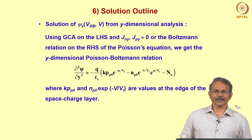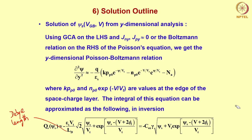We said that if you integrate this equation and approximate it, we can show that in inversion, the Qs as a function of ψs — that is the total silicon charge as a function of ψs — can be given by this formula, where LD is the Debye length.